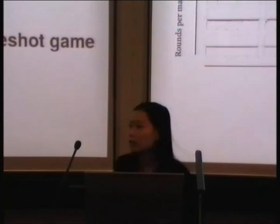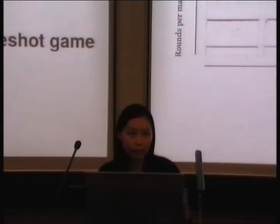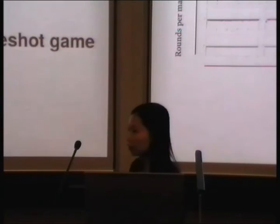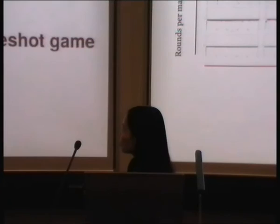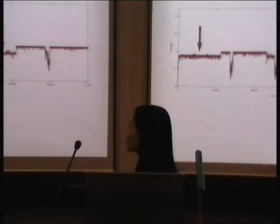Now we come to the repeated game, which has many more strategies. To calculate the replicator dynamics for this game would require many more dimensions — it's impossible to solve analytically, so I have to run simulations. The result shows that for the one-shot game the population average is always 5, but for the repeated game there are periods where the population average drops below 5, or even down to 2.5, which is very low.